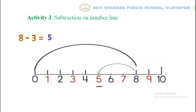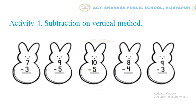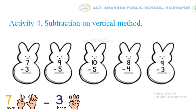Let us solve activity number 4: subtraction on vertical method. Children, look at the bunnies. Each bunny has one subtraction problem. Children, hold up 7 fingers as shown. Now remove 3 fingers from that. Count how many fingers are left — that is 4, 4 fingers. So 7 minus 3 equals to 4. Write the answer as shown.